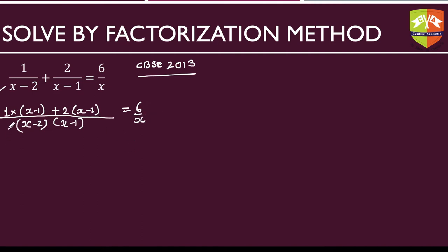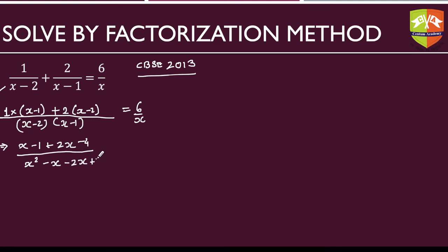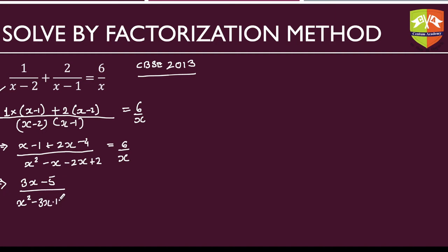Simplifying the numerator on the left-hand side gives x minus 1 plus 2x minus 4, and the denominator becomes x squared minus x minus 2x plus 2, which is x squared minus 3x plus 2. So we have (3x minus 5) over (x squared minus 3x plus 2) equals 6 upon x.